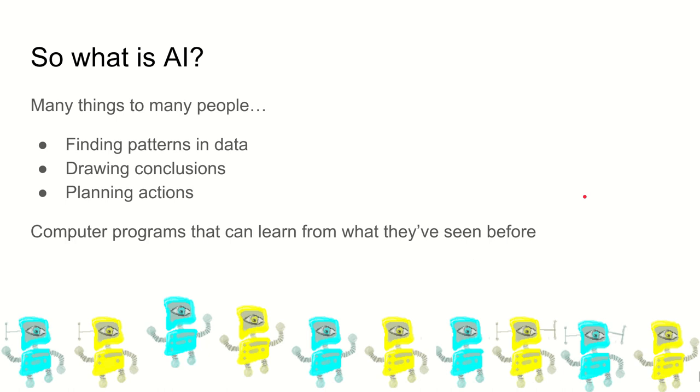So what is AI? This has been a very rapid overview of AI, particularly looking at machine learning. But to summarise, I say that AI is finding patterns in data. It's drawing conclusions from data. So it's taking lots of data and working out what you can conclude from that in terms of classification or in terms of something else. And it's about planning actions. It's about working out what you can do next.